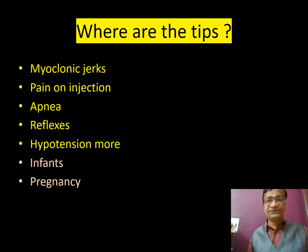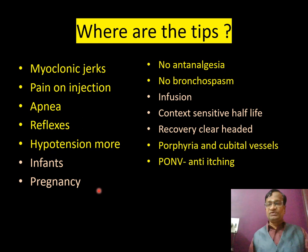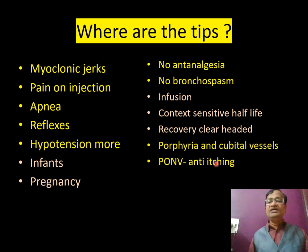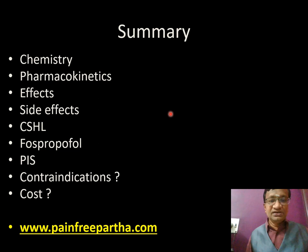Key clinical tips for propofol: myoclonic jerks, pain on injection, and apnea are notable side effects. Protective reflexes are slightly preserved. Hypotension is more pronounced because the tachycardic response seen with thiopentone is absent. Beware in infants and in pregnancy. No bronchospasm. Context-sensitive half-time is very short — 11 + 4 minutes per hour — making it suitable for ICU sedation. Recovery is clear-headed. PONV is an important advantage. It is anti-pruritic — reverses itching from epidural morphine. Subscribe to the channel and see the slides at painfreeparatha.com.